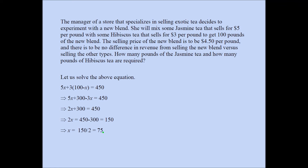The blend will need 75 pounds of jasmine tea. How many pounds of hibiscus tea does she need? Obviously 25 pounds, because the two types of tea should add up to 100 pounds. So our final answer is: jasmine tea — 75 pounds, hibiscus tea — 25 pounds.